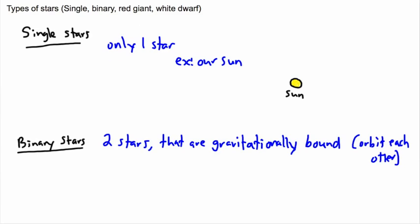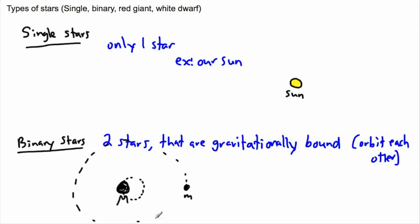An example: let's say we have one large star, call it big M, and a smaller star, little M — that's their mass. A lot of people think the biggest one stays still while the smallest one goes around, but that's not the case. They actually orbit their own center of mass. So the bigger one moves only a little, while the smaller one orbits a much larger orbit — they're dancing around each other.